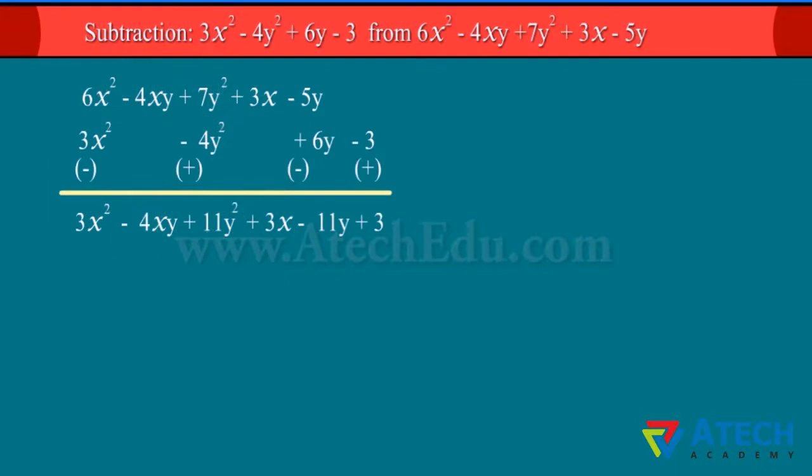Now we will subtract 3x² - 4y² + 6y - 3 from 6x² - 4xy + 7y² + 3x - 5y. We will arrange the like terms as shown here.